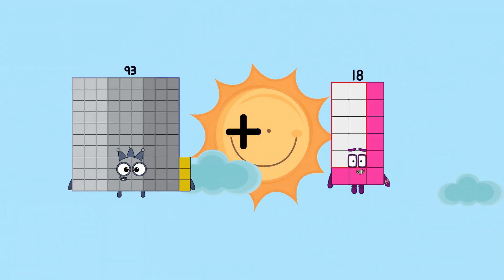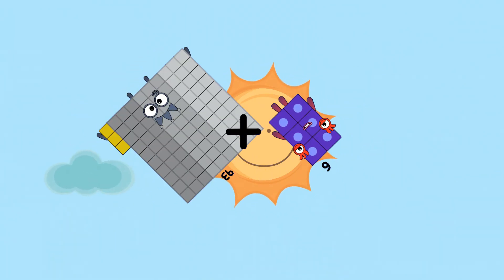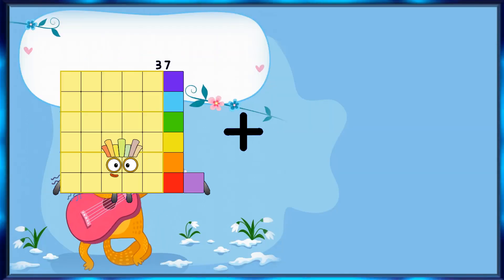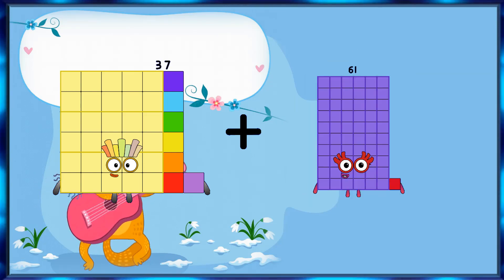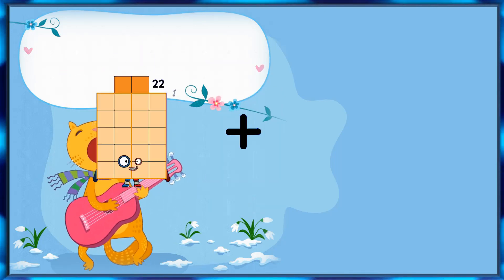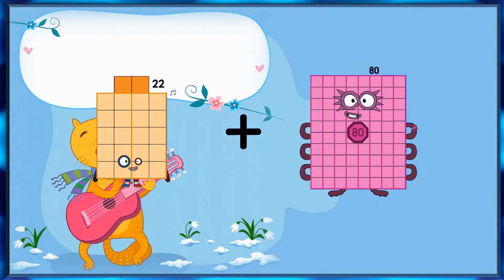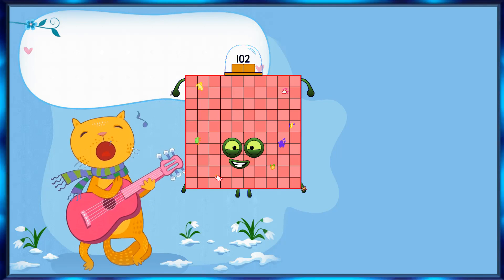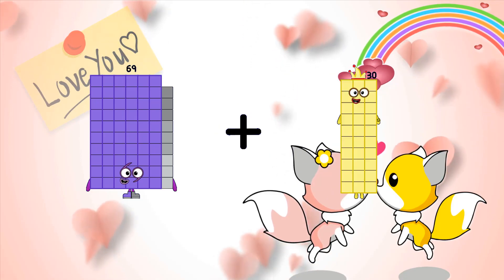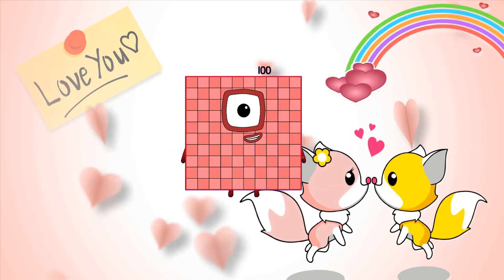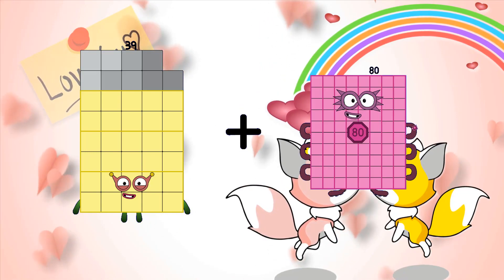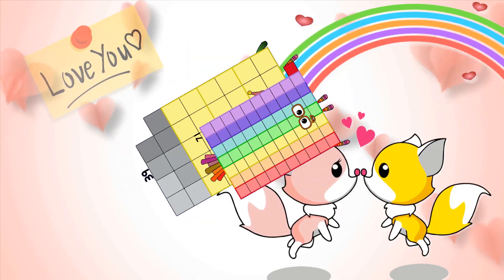Ninety-three plus six equals ninety-nine. Thirty-seven plus sixty-one equals ninety-eight. Twenty-two plus eighty equals one-hundred-two. Sixty-nine plus thirty-one equals one-hundred. Thirty-nine plus seventy-one equals one-hundred-ten.